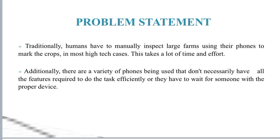Problem Statement: Traditionally, humans have to manually inspect large farms using their phones to mark the crops. In most high-tech cases, this takes a lot of time and effort. Additionally, there are a variety of phones being used that don't necessarily have all the features required to do the task efficiently, or they have to wait for someone with the proper device.